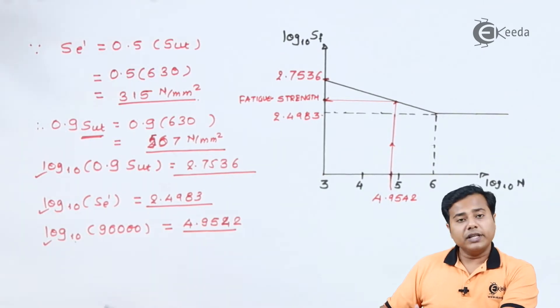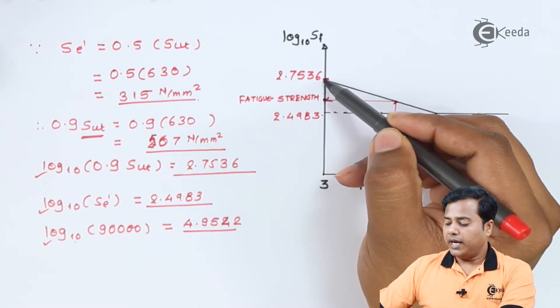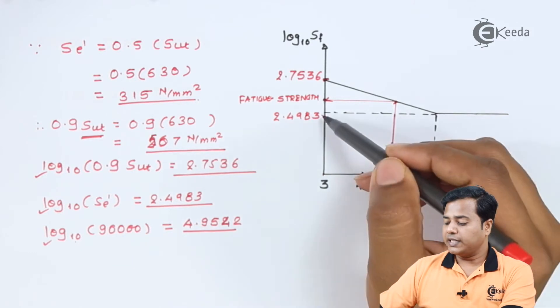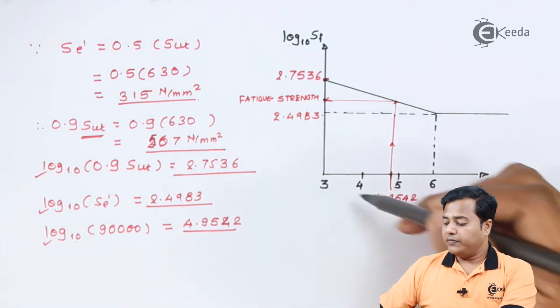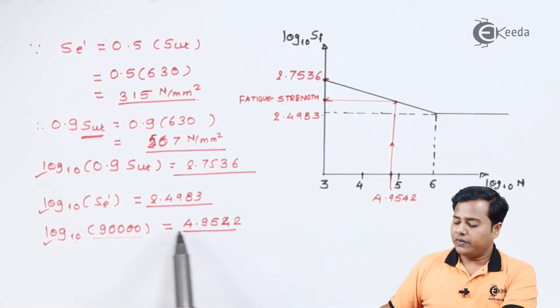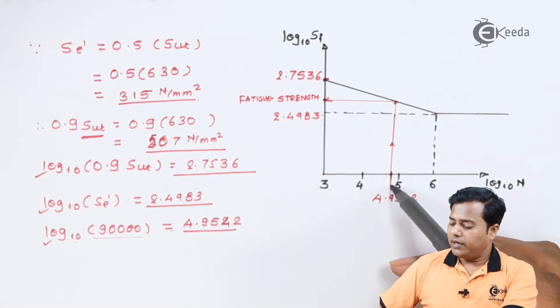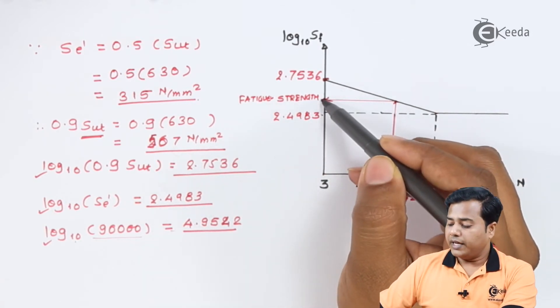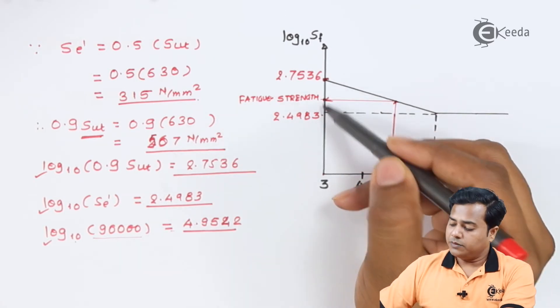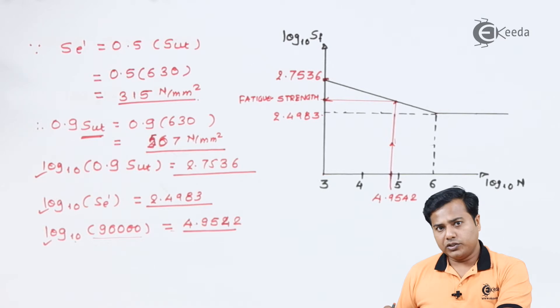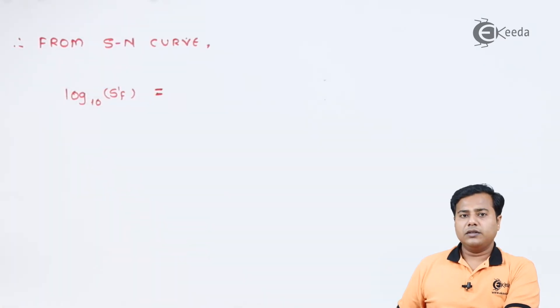So let me quickly repeat what we have done. We have found out the value at 10 raise to 3 cycles, we found out the value at 10 raise to 6 cycles. In between them, with the given cycles or number of cycles, we have converted them in terms of the logarithmic value. The value lies somewhere here. After plotting the value, we come to know that the actual value that we need to find out lies between these two extreme values, so we have to go for the interpolation.